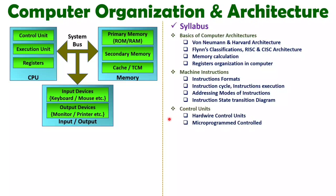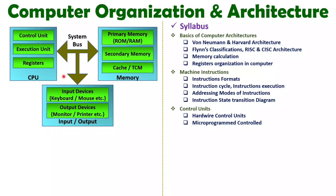In the third unit I have covered the control unit inside the CPU. To explain the control unit I have explained both hardware control units and microprogrammed control units. By having both these categories, I explained how a computer executes micro-instructions.